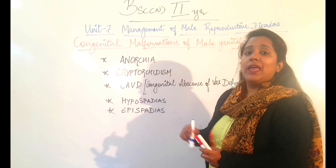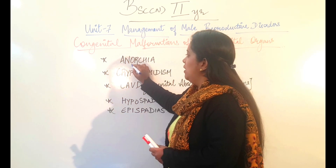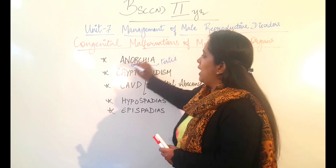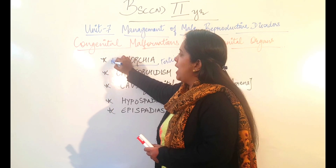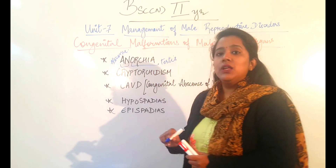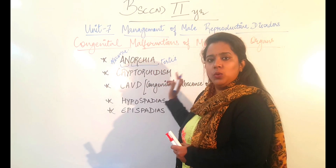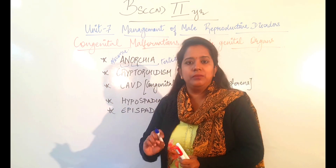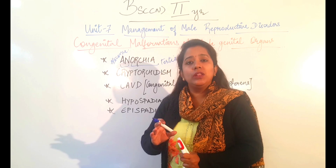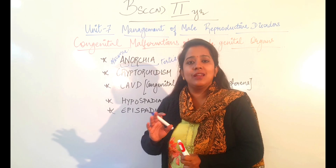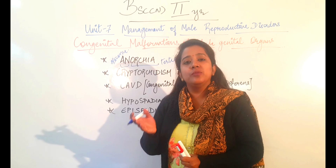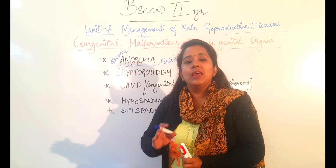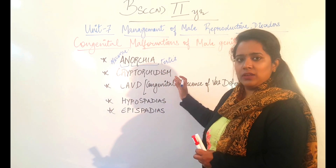The first condition is Anorchia. 'Orchia' refers to testes and 'An' means absence. So Anorchia means that a boy child is born with both testes absent. That situation is called Anorchia.